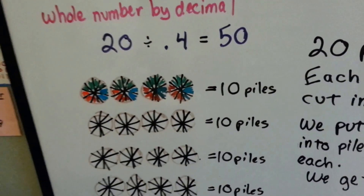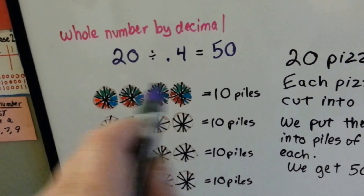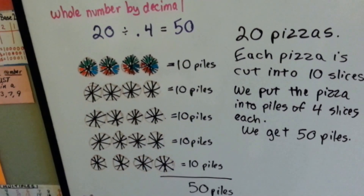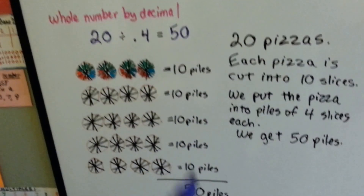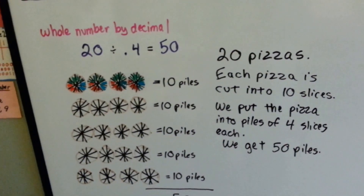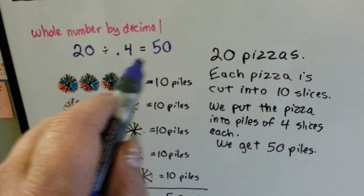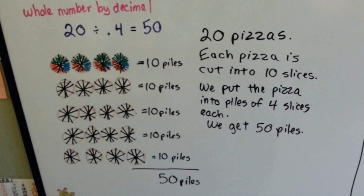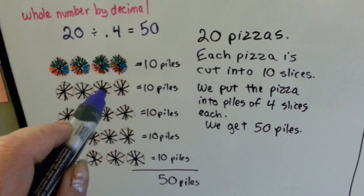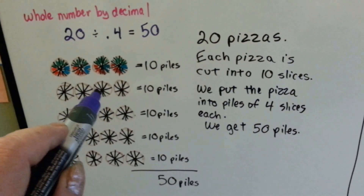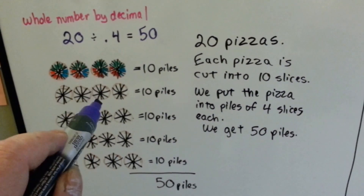Now between the 2 of them there's 5 piles. We've got 10 piles for 4 — that's 10, 20, 30, 40, 50 piles. We have 50 piles of pizza. So 20 divided by 4 tenths is 50. It's because we're dealing with tenths — we had to cut each pizza into 10 and take 4 of the tenths.